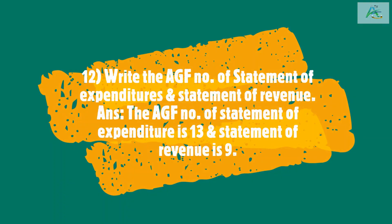Write the AGF number of Statement of Expenditures and Statement of Revenue. The AGF number of Statement of Expenditure is 13 and Statement of Revenue is 9.